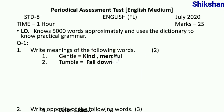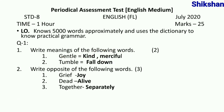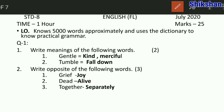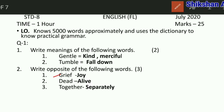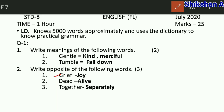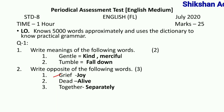Then second question आपका दिया गया है — right opposite to the following words। जो भी नीचे words दिए गए हैं, इनके opposites आपको लिखना है। Grief का opposite होता है joy। Then dead का opposite होता है alive। And together का opposite होता है separately। तो यहाँ पर question number one complete।